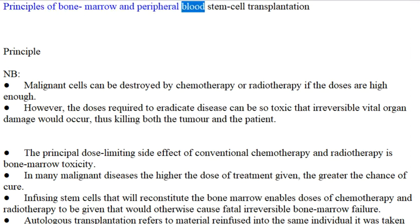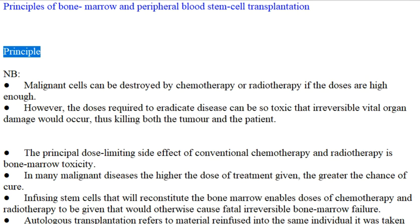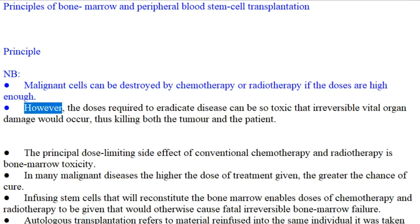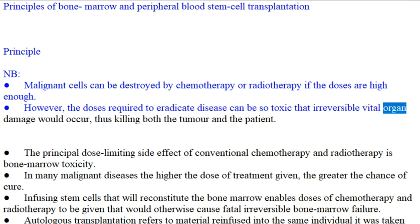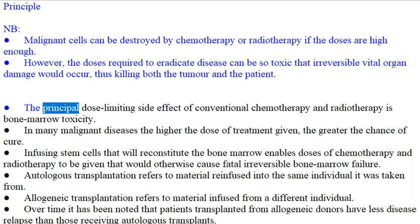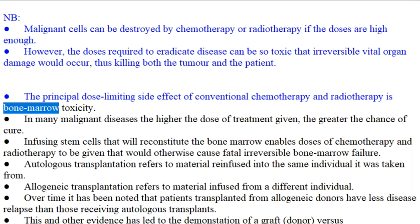Principles of Bone Marrow and Peripheral Blood Stem Cell Transplantation. Malignant cells can be destroyed by chemotherapy or radiotherapy if the doses are high enough. However, the doses required to eradicate disease can be so toxic that irreversible vital organ damage would occur, thus killing both the tumor and the patient. The principal dose-limiting side effect of conventional chemotherapy and radiotherapy is bone marrow toxicity.